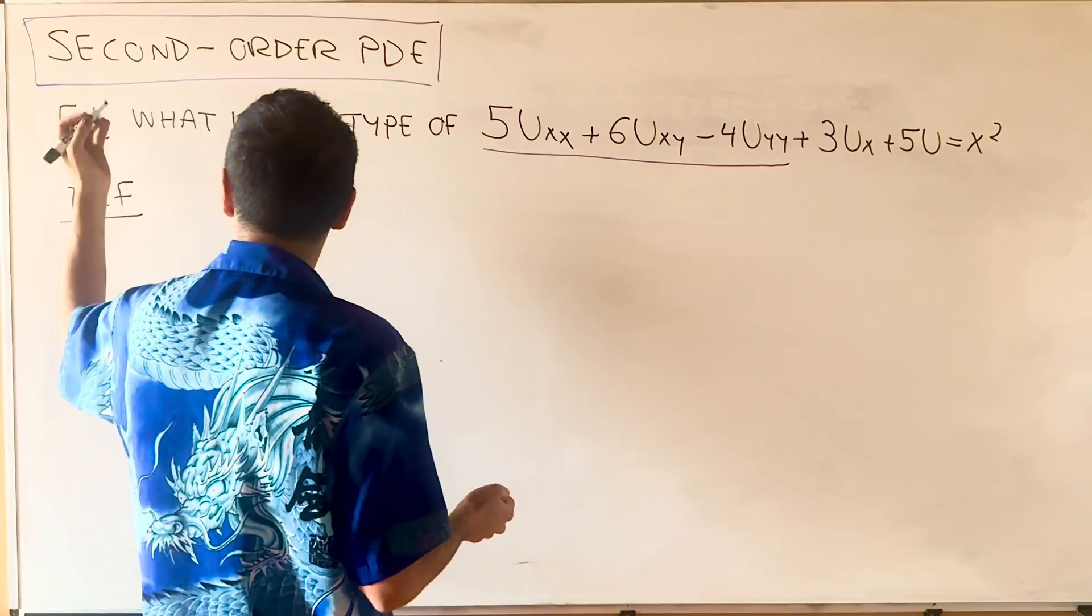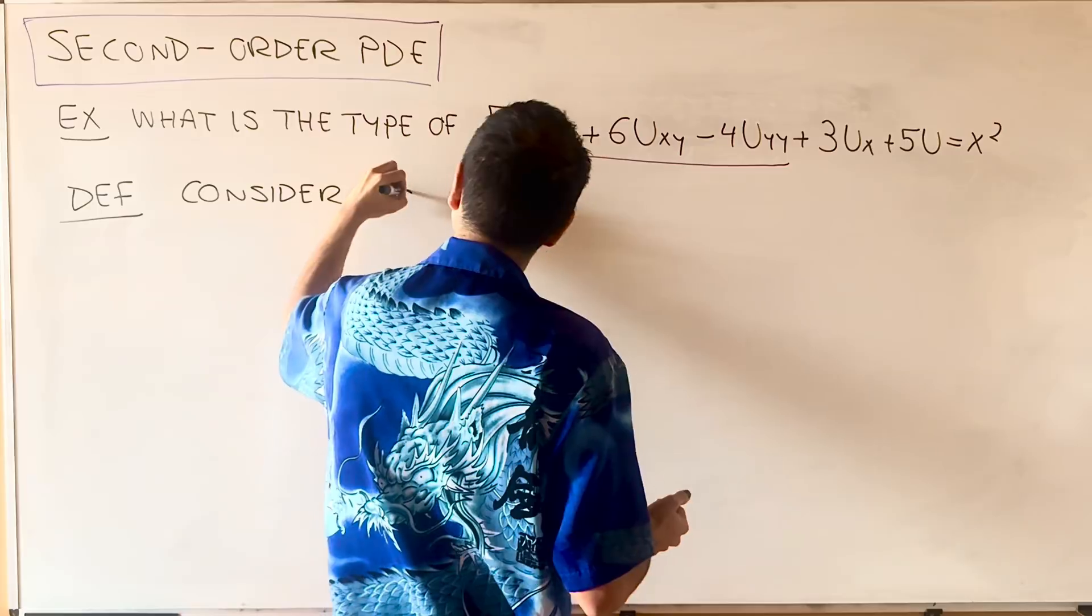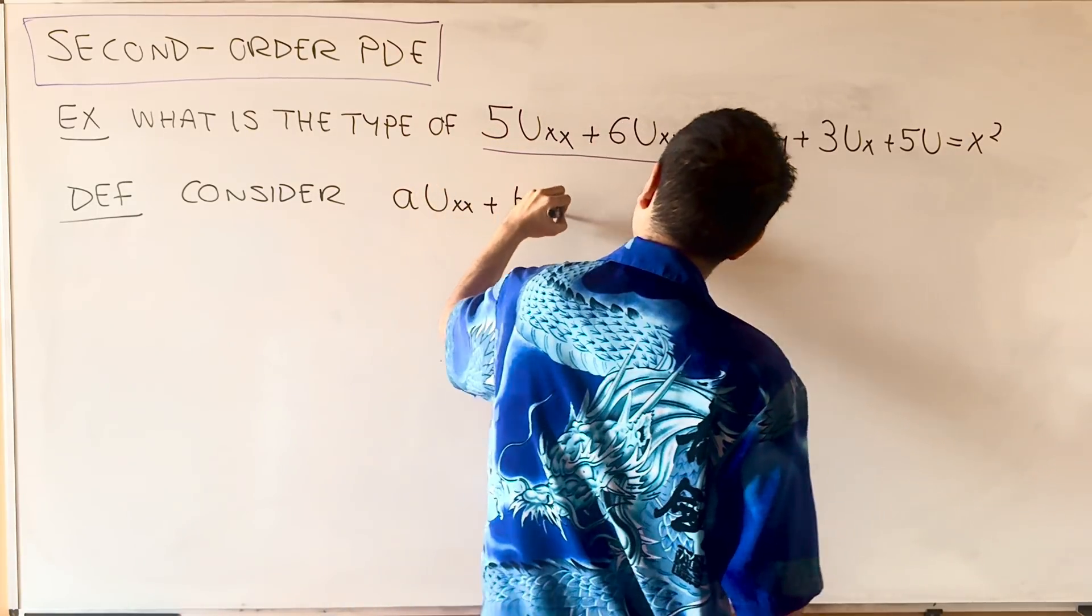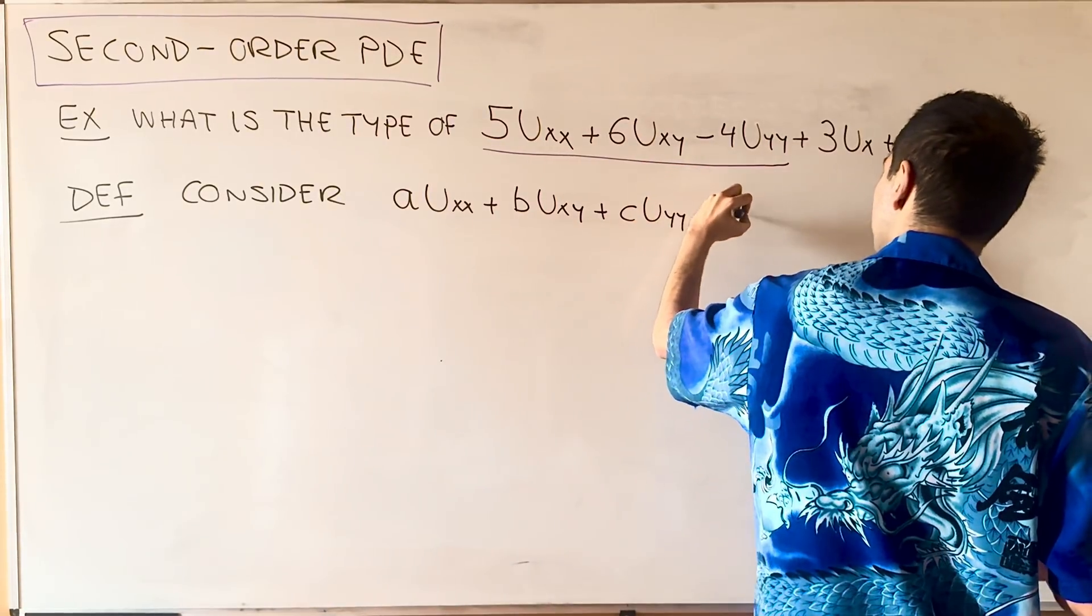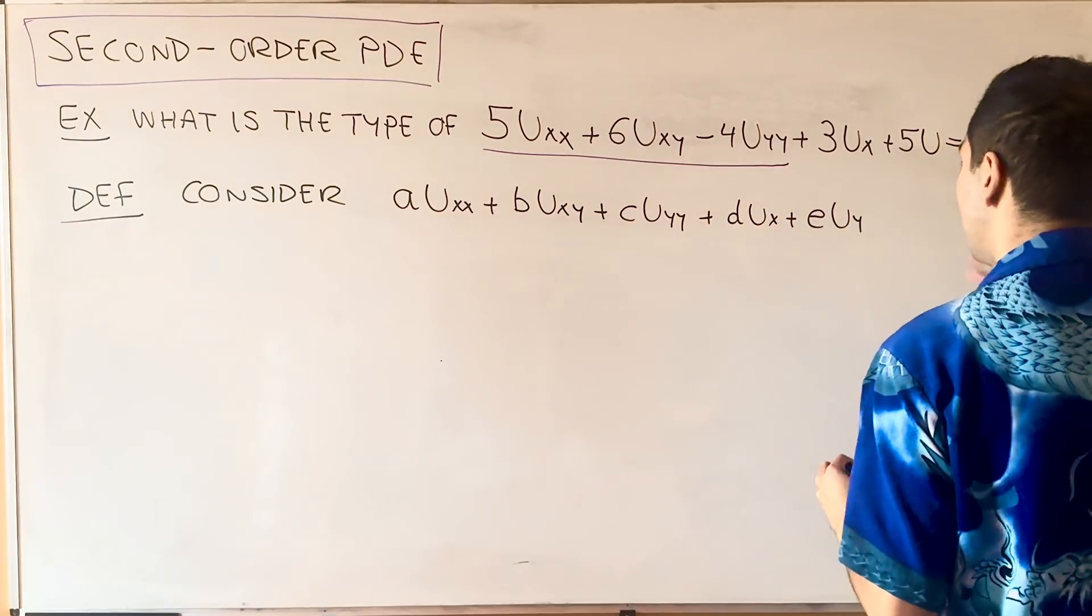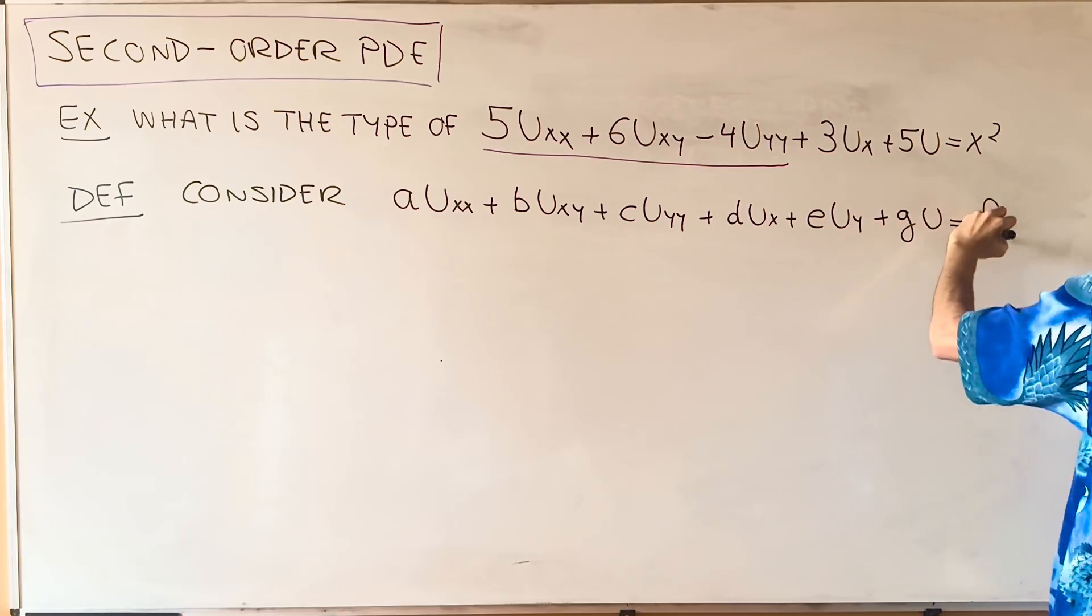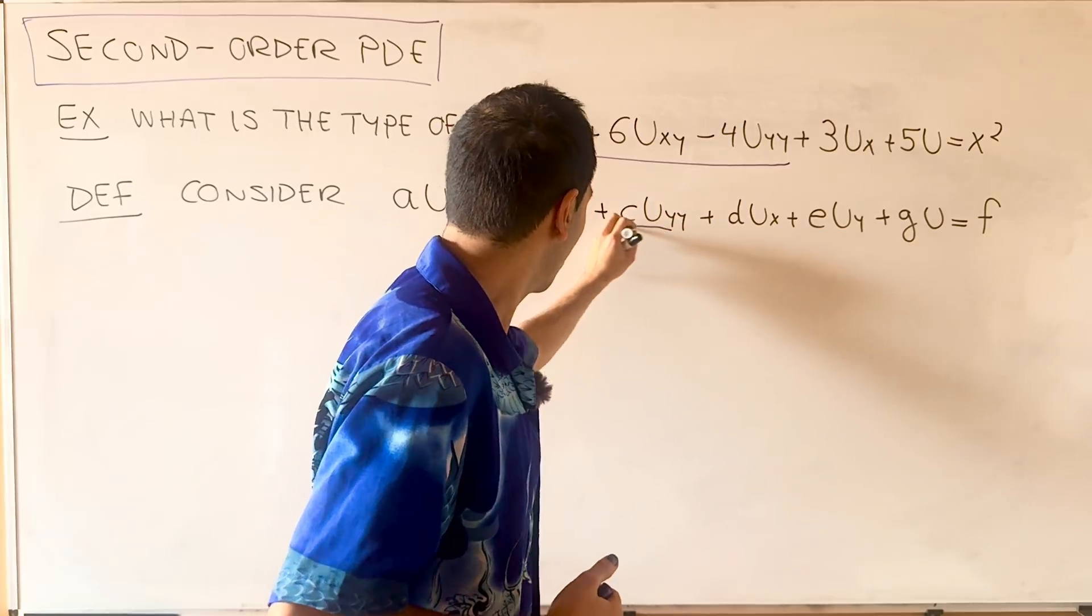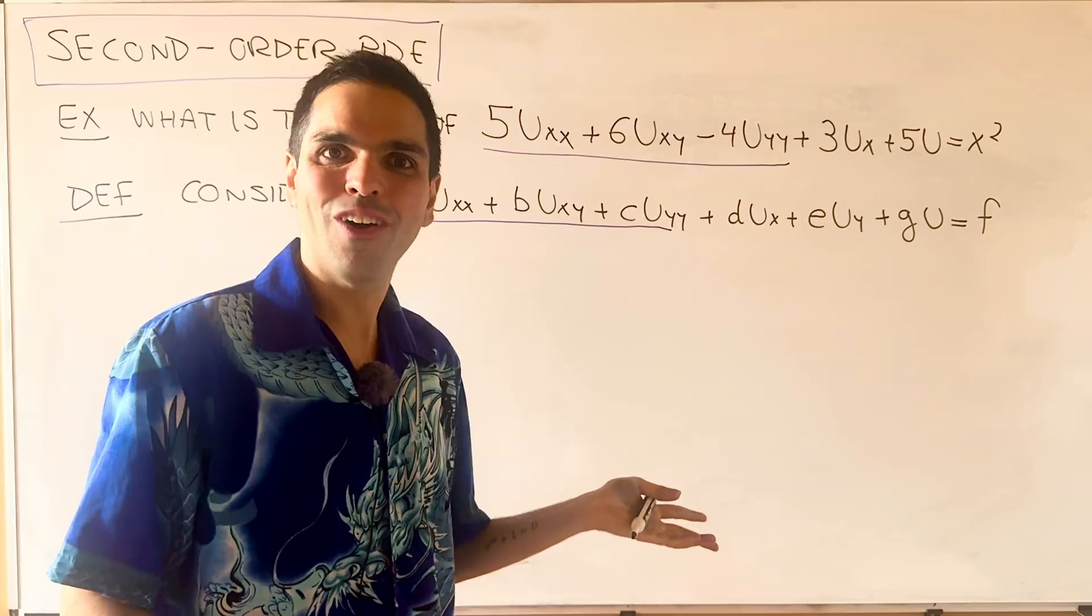Consider the PDE: AU_XX plus BU_XY plus CU_YY plus other terms - DU_X plus EU_Y. I'll use F for the right-hand side, so let's write GU equals F. Once again, let's look at the second-order terms themselves. For this, we need a helper function,